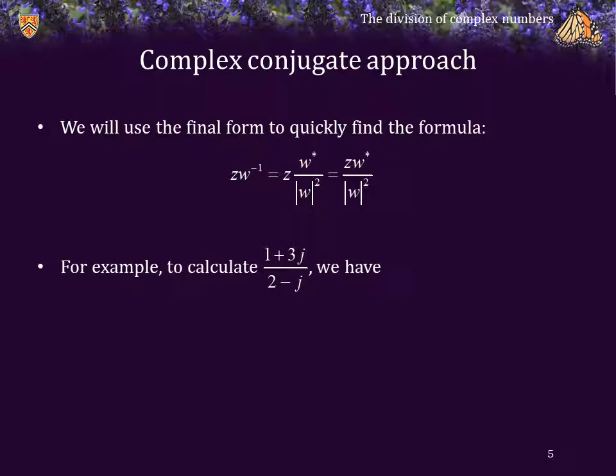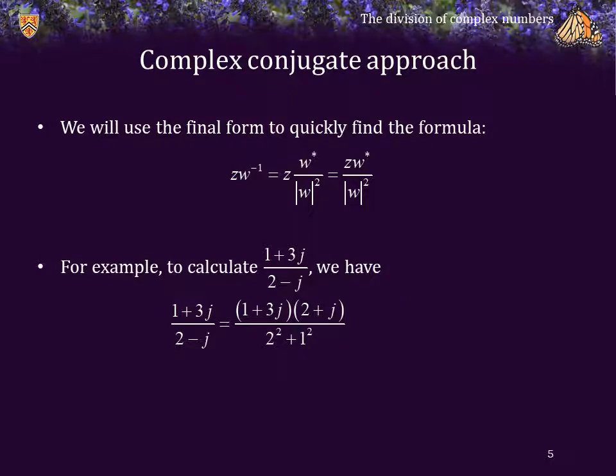For example, to calculate the ratio of 1 plus 3j over 2 minus j, we multiply 1 plus 3j by the complex conjugate of 2 minus j, which is 2 plus j, and we divide that by the magnitude of the denominator squared, which happens to be 5. The result is that expression, which equals negative 0.2 plus 1.4j.